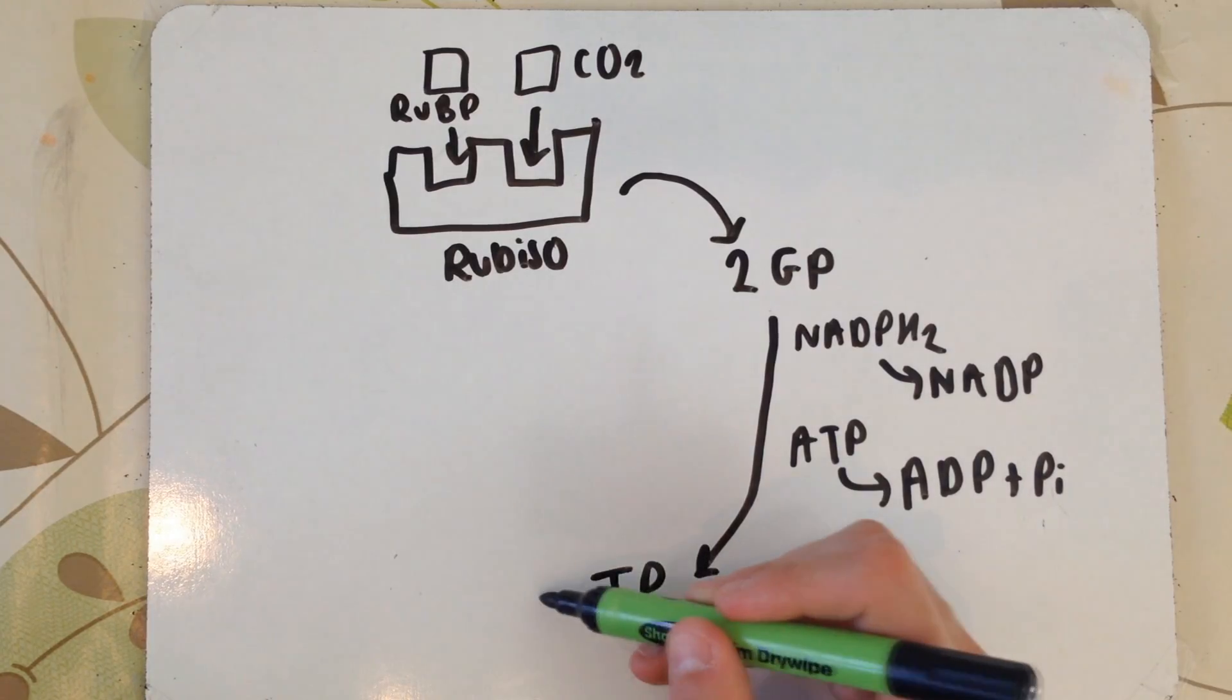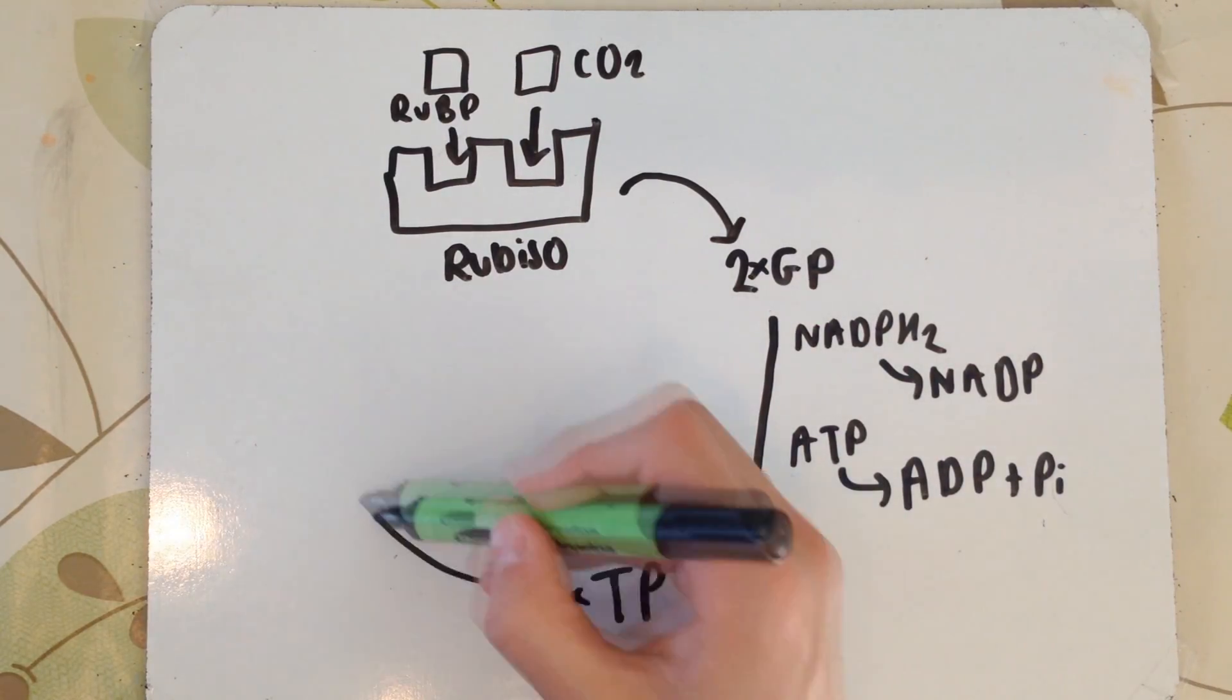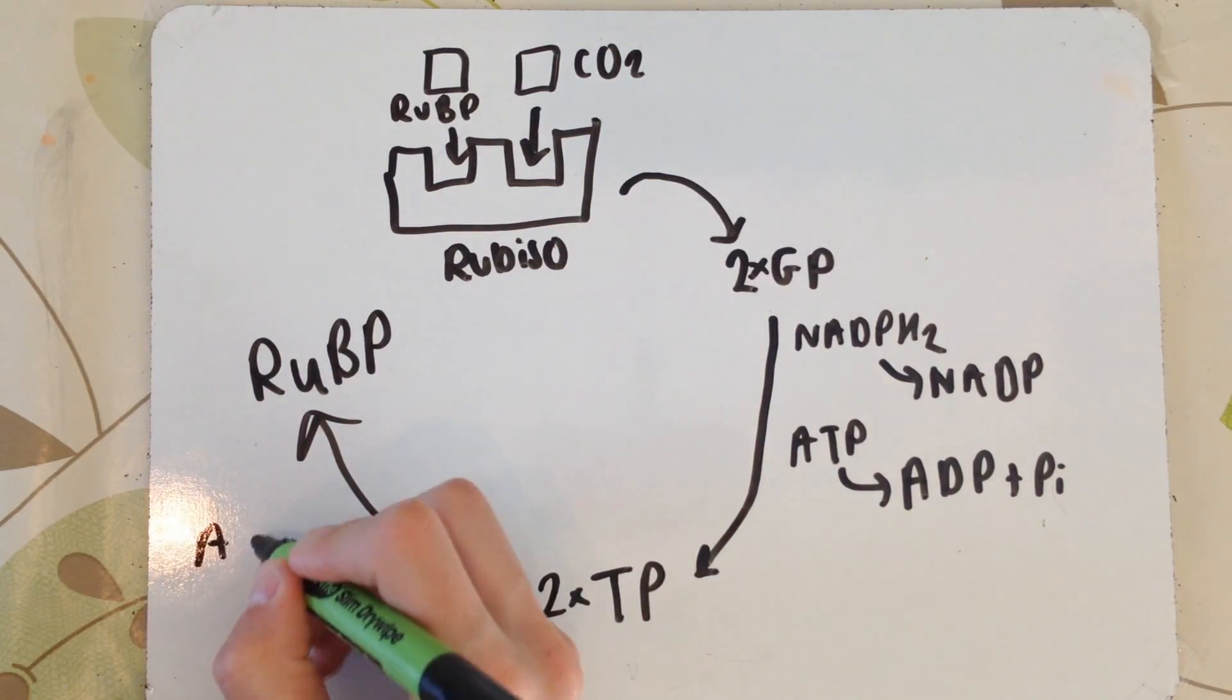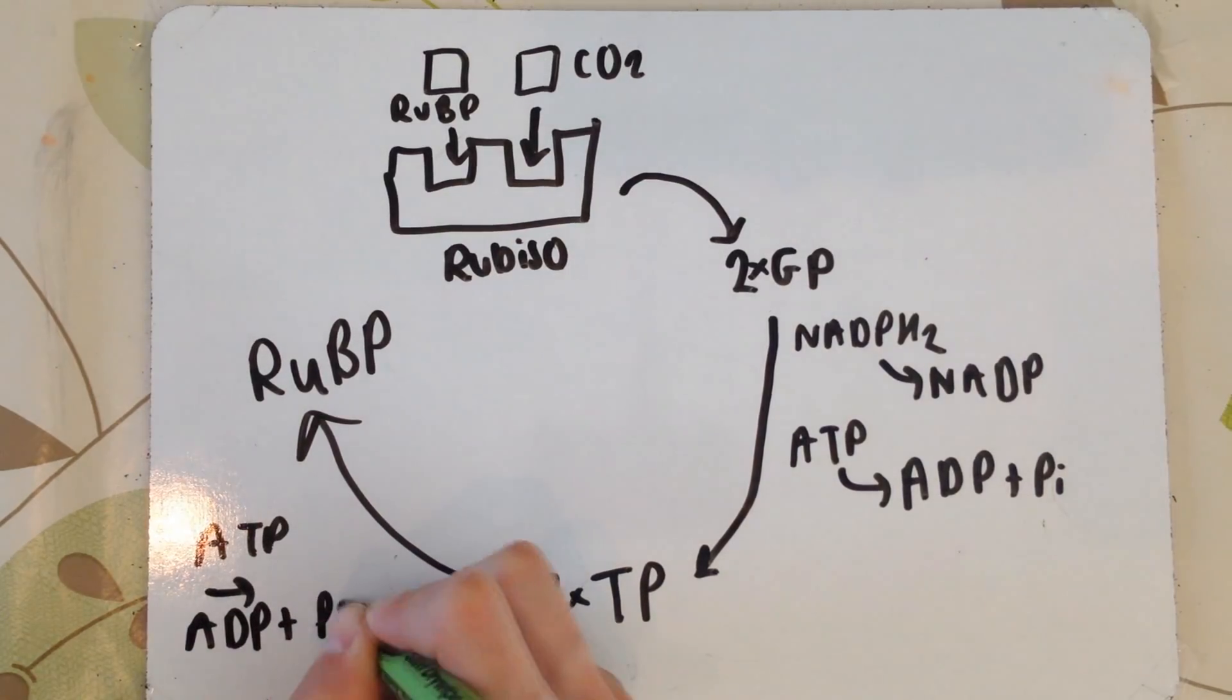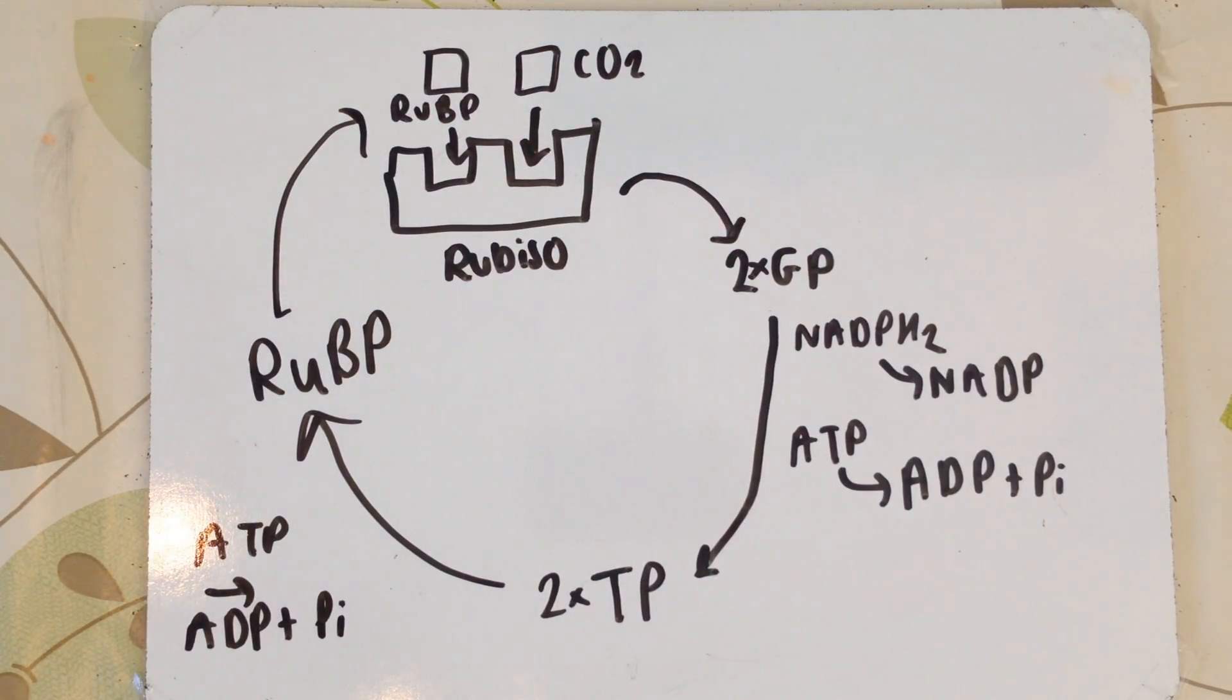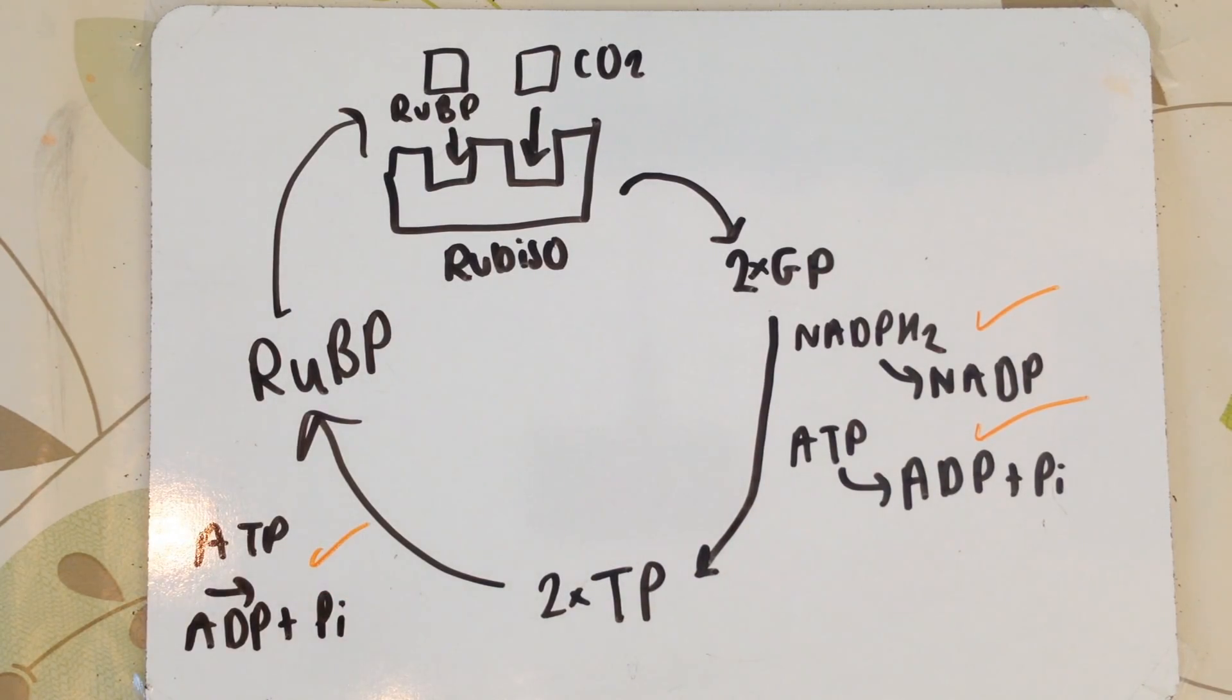Triose phosphate then needs to be converted to RUBP, ribulose bisphosphate. However, to do this we still need to use ATP again from the light-dependent stage, converting that back to ADP, and the phosphate group is used once again. Essentially, you need to remember here the products of the light-dependent reaction, the ATP and the reduced NADP, are then used.